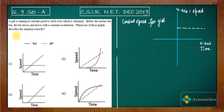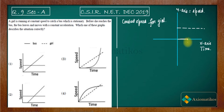Before she reaches the bus, the bus leaves and moves with constant acceleration. Initially the bus was stationary, meaning speed was zero and only time was advancing. So up to time t₀, the bus was stationary — its speed remains zero on the graph up to that point.